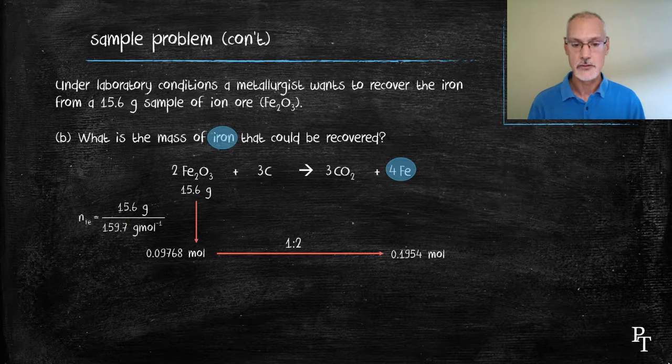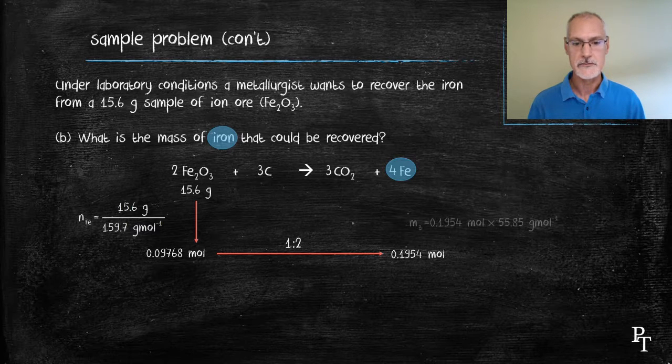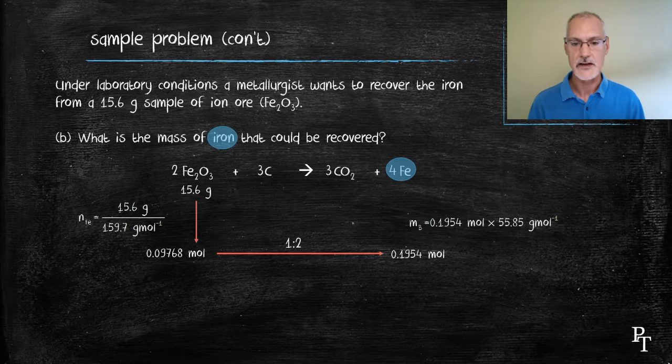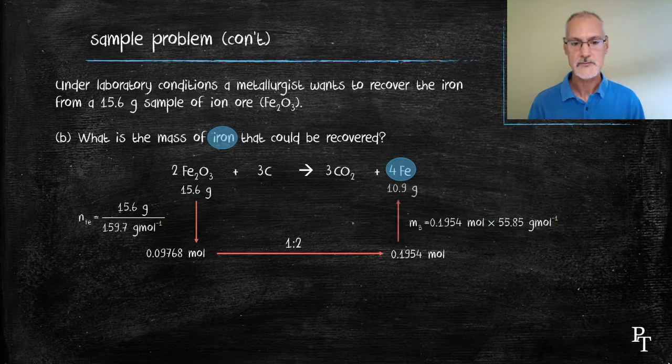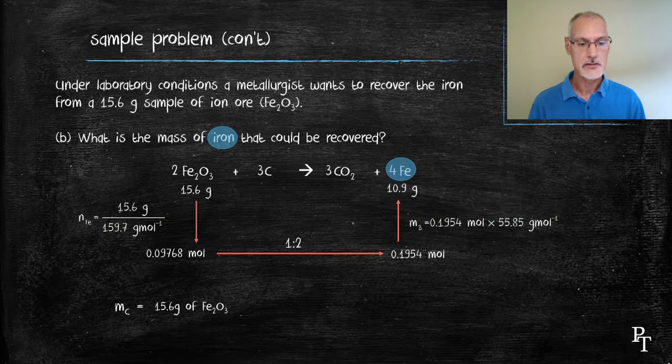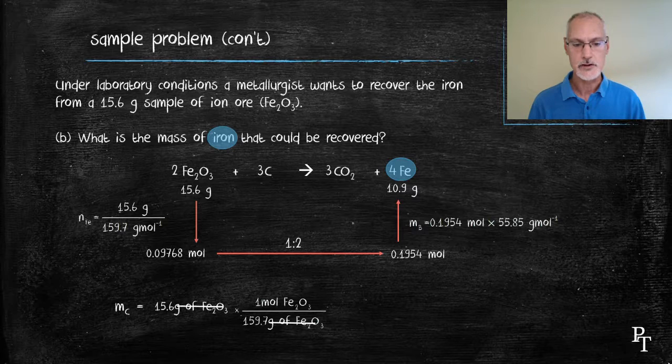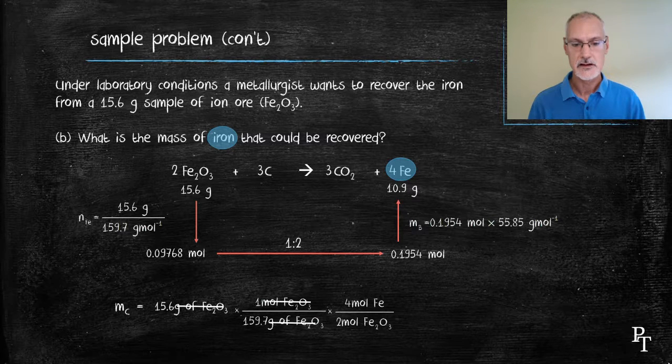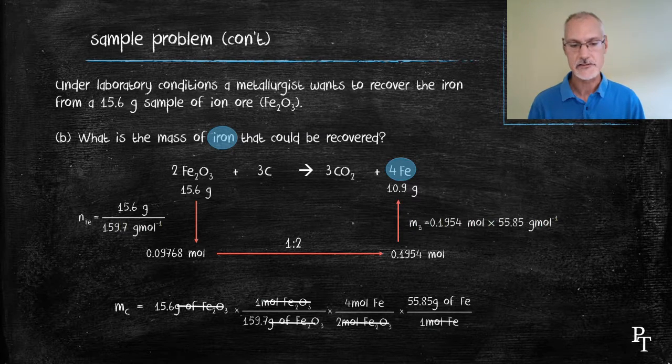Now I want to convert those moles of iron oxide into grams of iron by multiplying by the molar mass of iron. And I get 10.9 grams. Again, using unit conversion, I can take each of the substances and multiply it by the appropriate conversion factor and arrive at exactly the same answer.